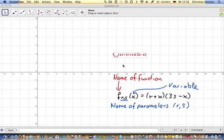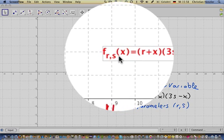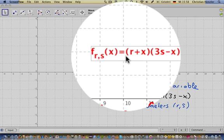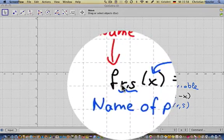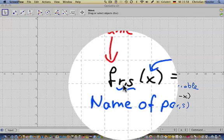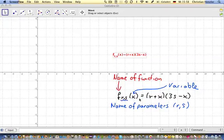I have a family of functions here and its equation is f of x equals in parentheses r plus x times in parentheses 3s minus x. Here f is the name of the function. And those little letters are always our parameters. We also find the parameters somewhere on the right side of our function. And x is the variable.